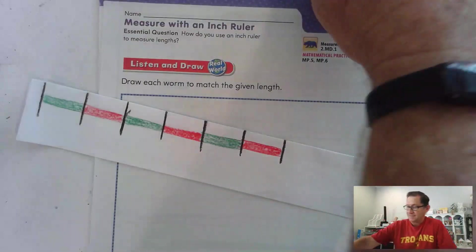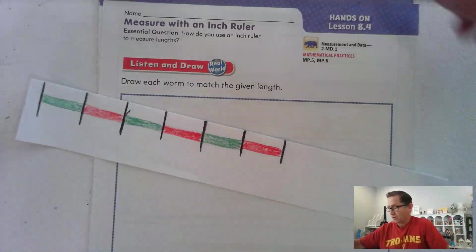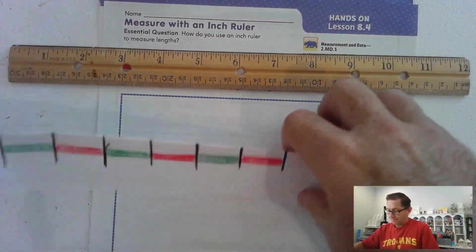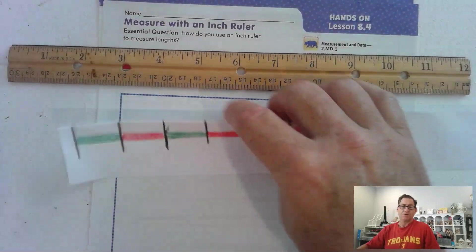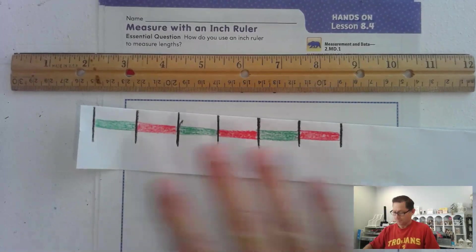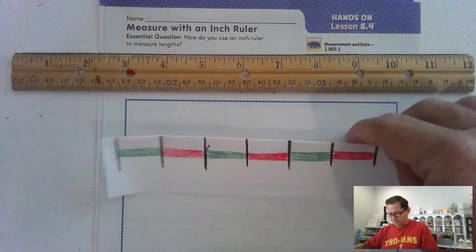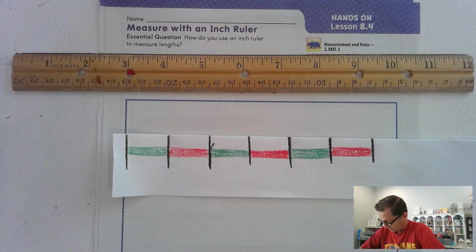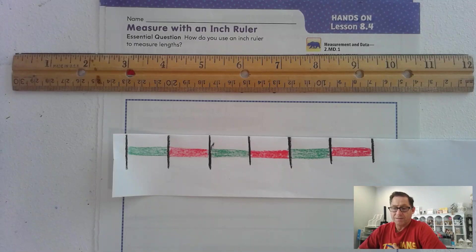Hello everybody. In today's lesson, lesson 8.4, we're going to start working with a regular inch ruler. To start, I want you to use the ruler that we made. I'm going to give you a couple situations and I want you to draw the length that I give you. Here's the first one. Use your ruler to draw a worm that is one inch long.